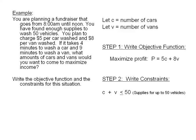The second constraint in the problem is that our fundraiser only lasts for 4 hours. 4 hours is the same as 240 minutes. And as we can see from the information in the problem, it takes us 4 minutes to wash a car plus 9 minutes to wash a van. Therefore, 4 times C plus 9 times V needs to be less than or equal to 240.